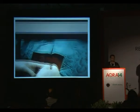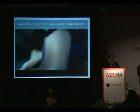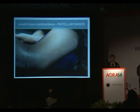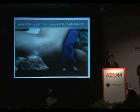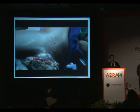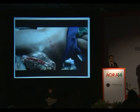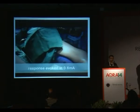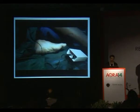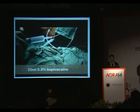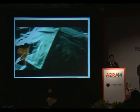Most of these patients have comorbid conditions, and these blocks suit them. This patient had a huge tumour with fungating and comorbid conditions. You can see the patellar dance along with the quadriceps contractions — this is the endpoint at 0.4 mA. Using an 18-gauge stimulating needle, you can introduce the needle, inject the drug to create space, and then insert catheters that go right into the lumbar plexus. The endpoint is always at 0.4 mA, with 20 mL of 0.5% bupivacaine, possibly combined with lignocaine 1.5%.